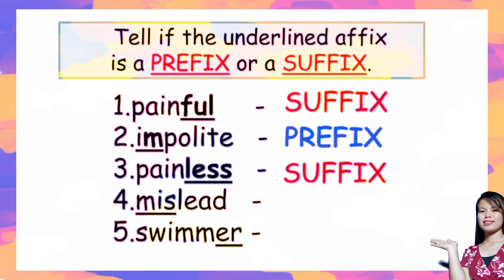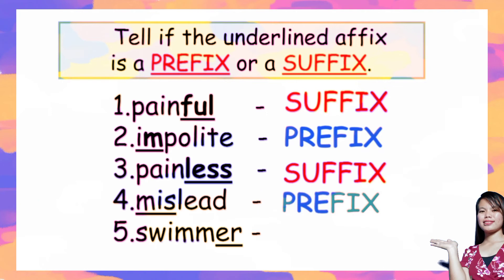Number four: 'misled' — the underlined affix is 'mis.' It is a prefix. Number five: 'swimmer' — the underlined affix is 'er.' It is a suffix. Do you understand suffix and prefix now, children?